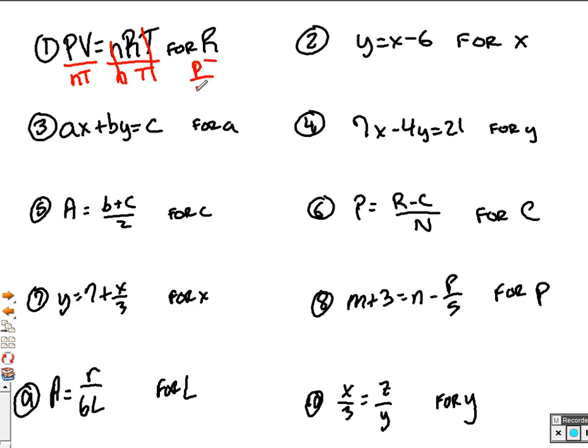So you have PV over N and T is equal to R. You have R by itself, you are done.